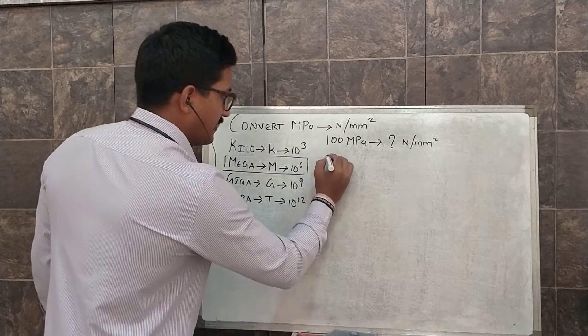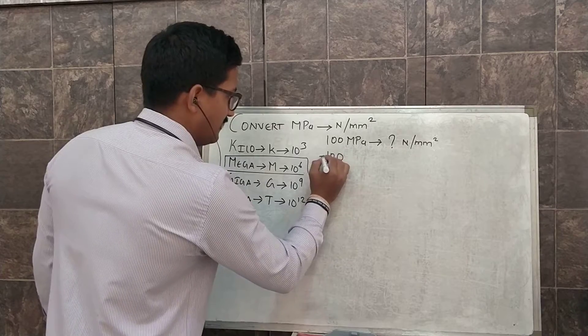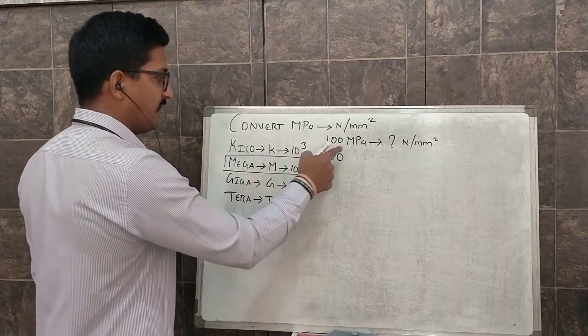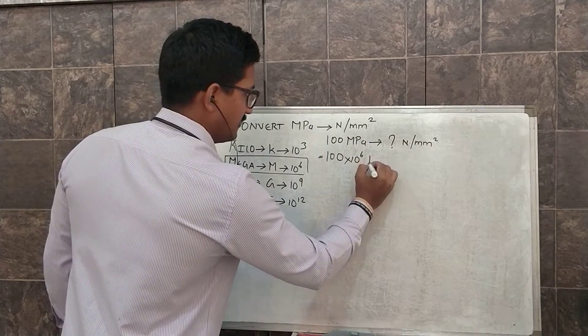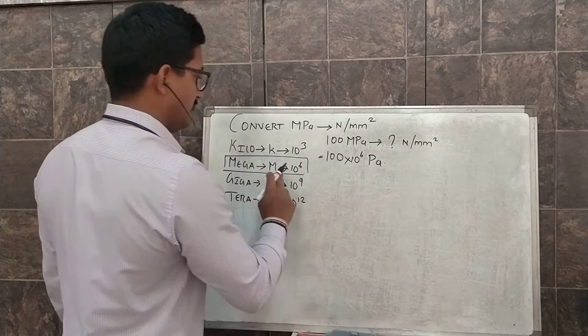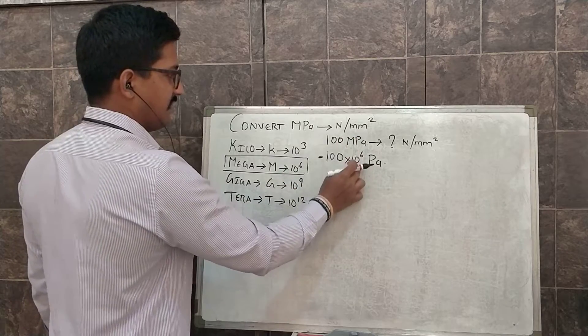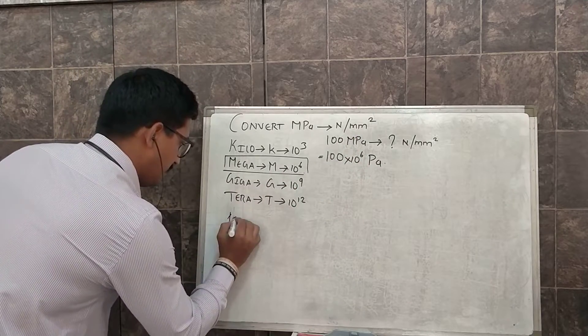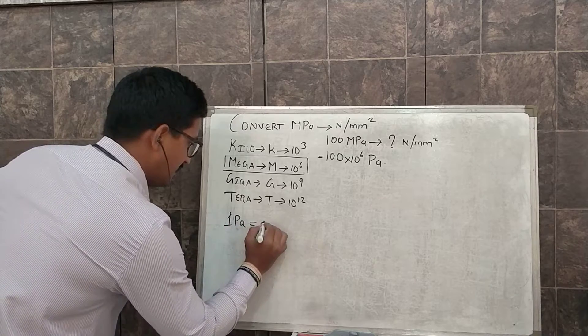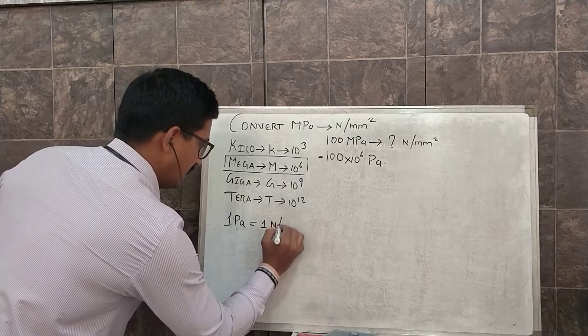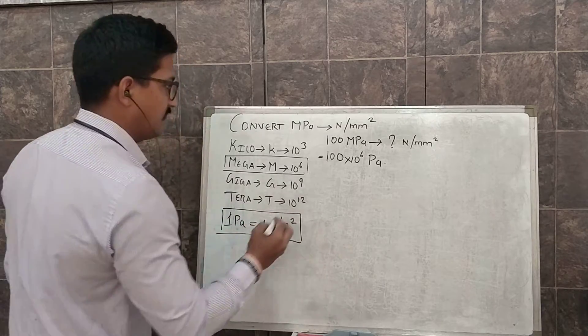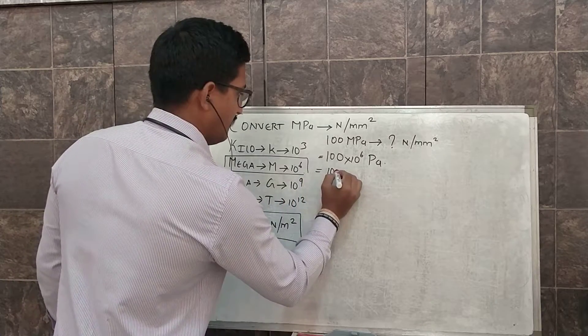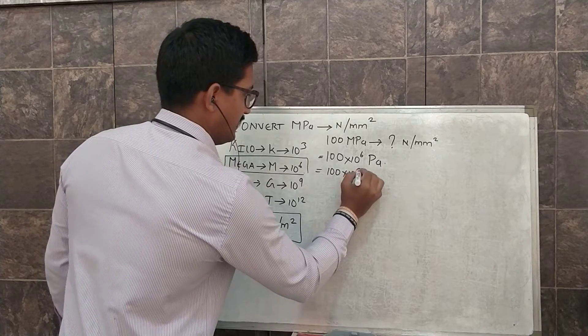Let's start. 100 megapascal can be written as, instead of mega I can write this as 10 raised to 6 pascal. Instead of mega I put 10 raised to 6 pascal. Now 1 pascal is equal to 1 Newton per m², correct. So now 100 into 10 raised to 6 Newton per m².